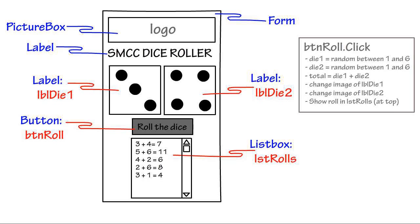We only have one thing to program here, and that's the button. When the user clicks it, we're going to have a variable called die1 that equals a random number between 1 and 6, and die2, another variable, also equal to a random number between 1 and 6. A variable called total will add those two together. Then we change the image of LBL die1 and LBL die2 according to what was generated for die1 and die2. And finally we show that roll in the LST rolls list box at the bottom.